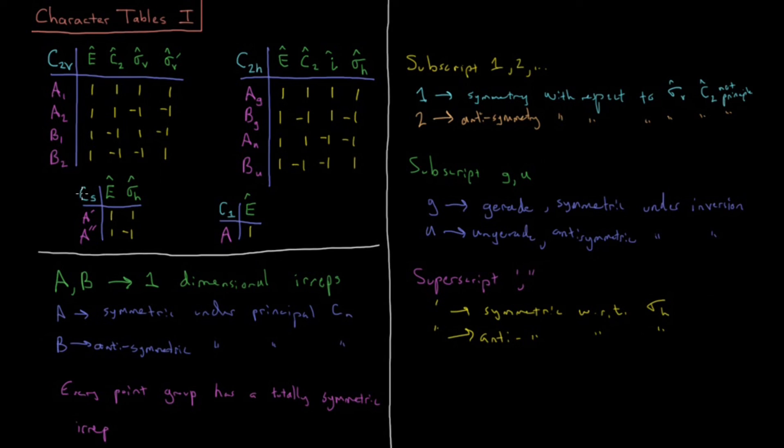So the only example I have of that up here is CS, which has E and sigma H in it. A prime symmetric with respect to sigma H, A double prime anti-symmetric with respect to sigma H. That's much less common than either seeing A and B, one and two, or G and U. Those come up much, much more often.